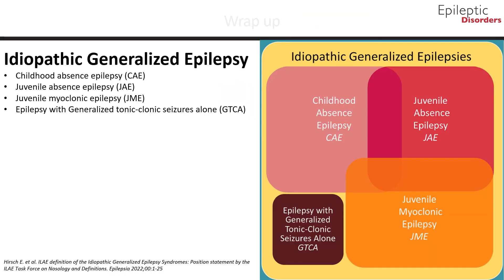To wrap up, in this module we talked about idiopathic generalized epilepsy, including childhood absence epilepsy, juvenile absence epilepsy, juvenile myoclonic epilepsy, and epilepsy with generalized tonic-clonic seizures alone.